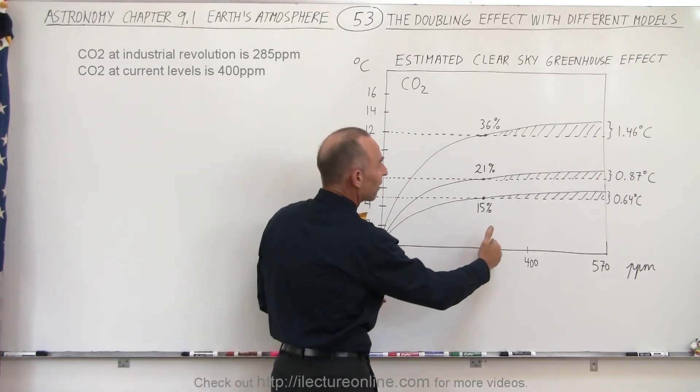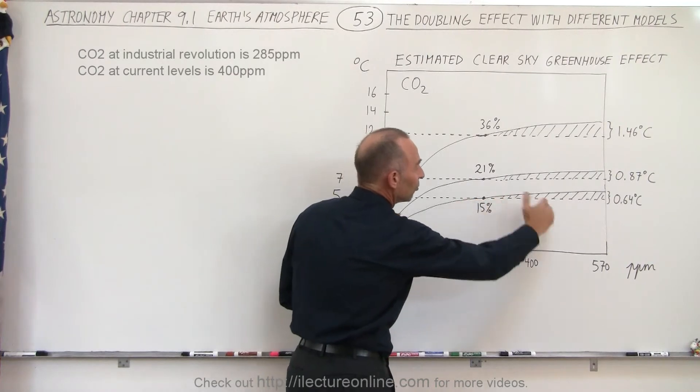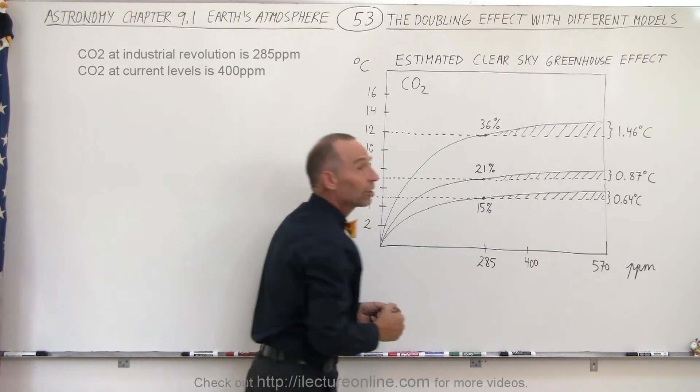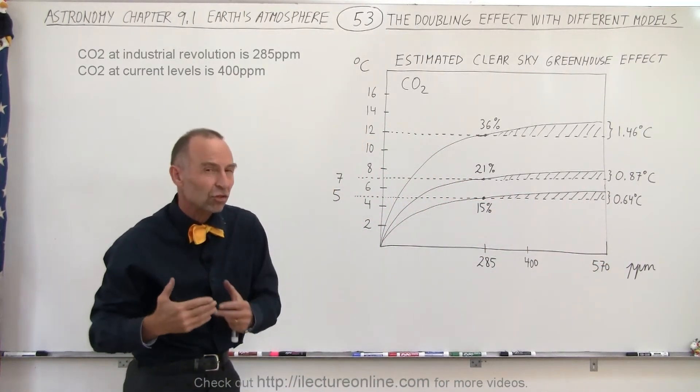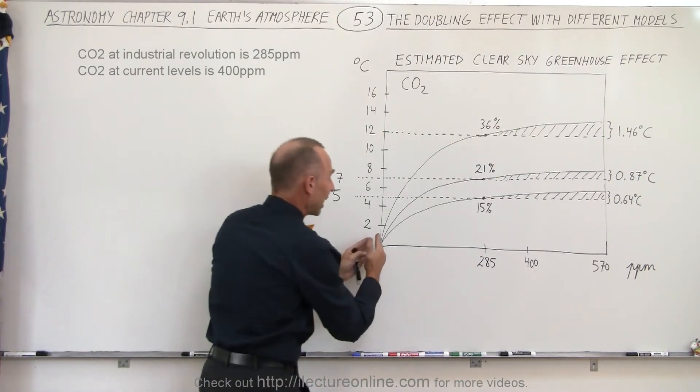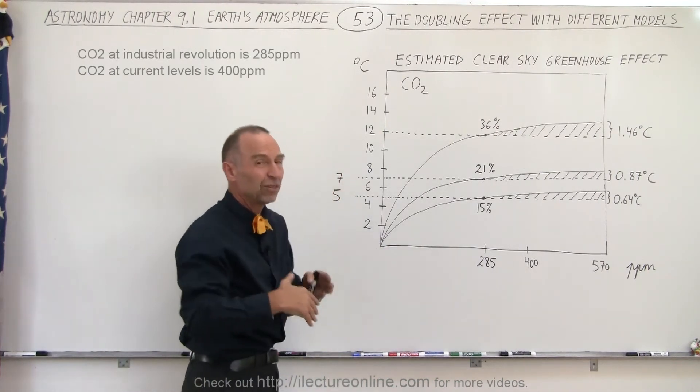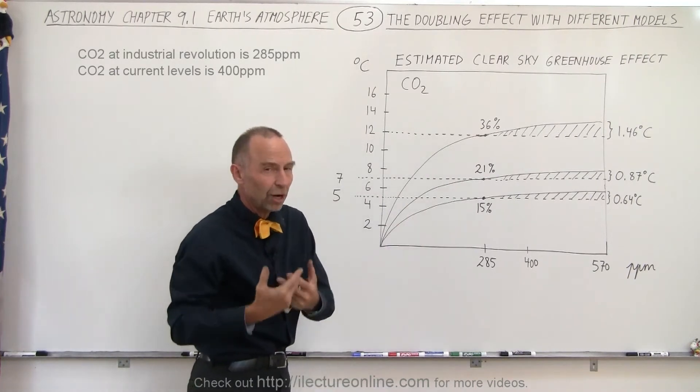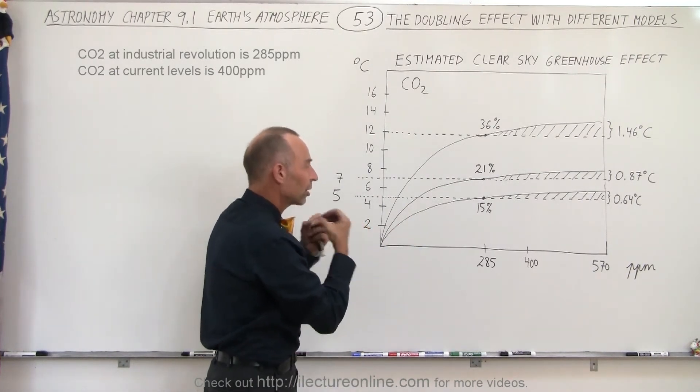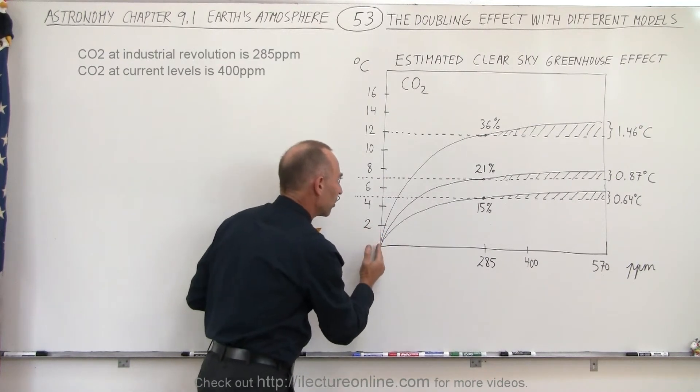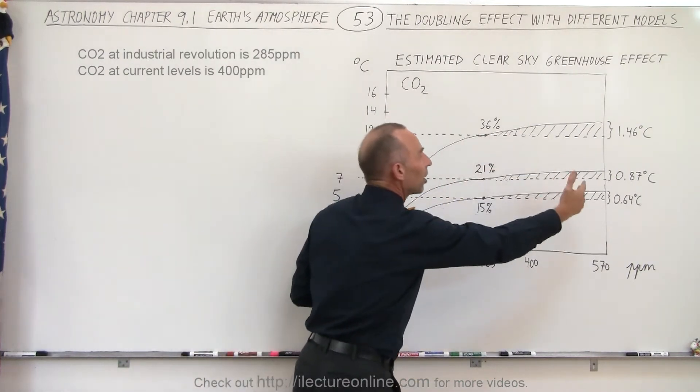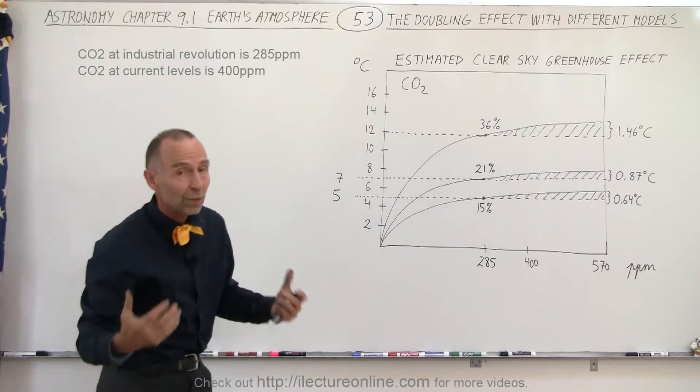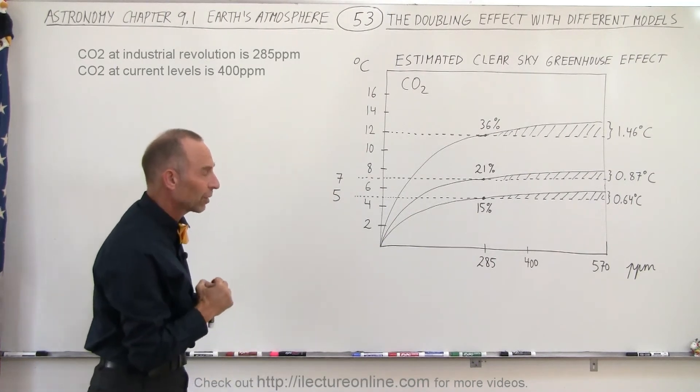Once we reach 285 and above and 400 and above, you see that additional increases in carbon dioxide does not change the temperature as much as it did when we had the initial increases. These initial increases were always there because naturally there's always carbon dioxide in the atmosphere, but from a theoretical perspective, what if there was no carbon dioxide? How much does carbon dioxide contribute to the greenhouse effect?